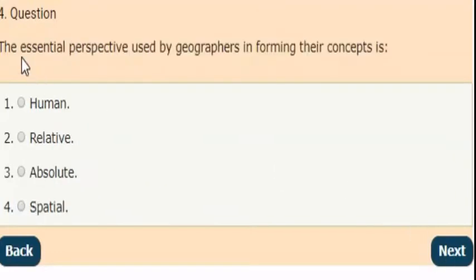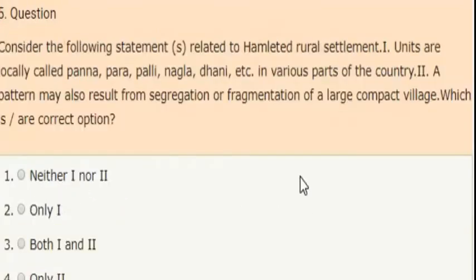Next question: the essential perspective used by geographers in forming their concepts. Options: human, relative, absolute, spatial. The correct answer is option 4: spatial.